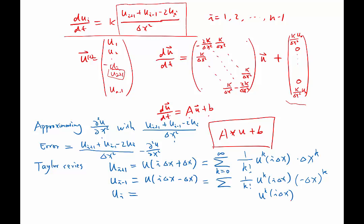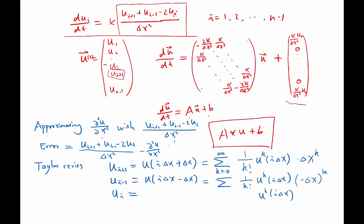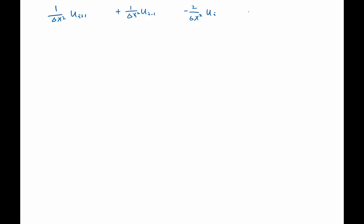So let's look at the accuracy of this scheme. The solution error is 1 over delta x times u_{i+1} plus 1 over delta x times u_{i-1} minus 2 over delta x squared times u_i, and also minus partial squared u over partial x squared. And for each of these terms, we are going to expand the Taylor series.